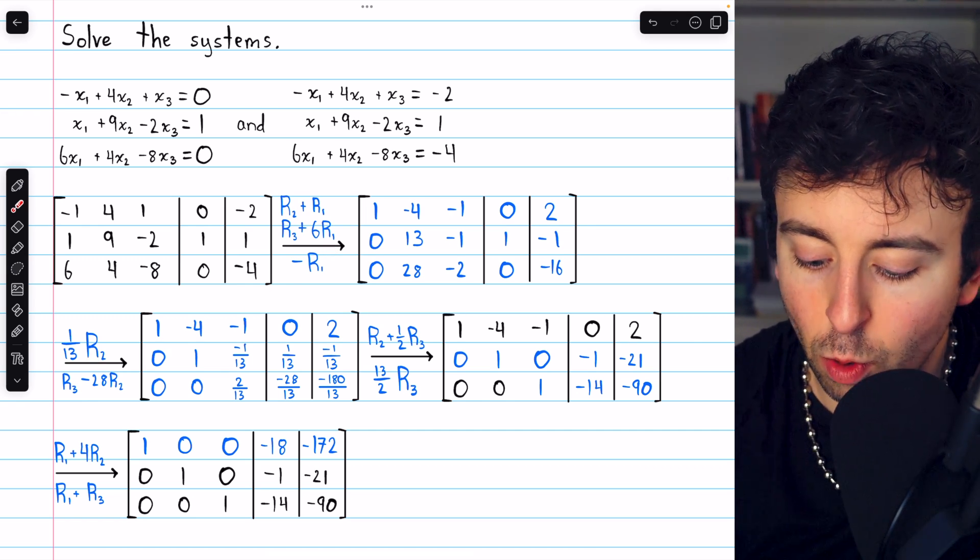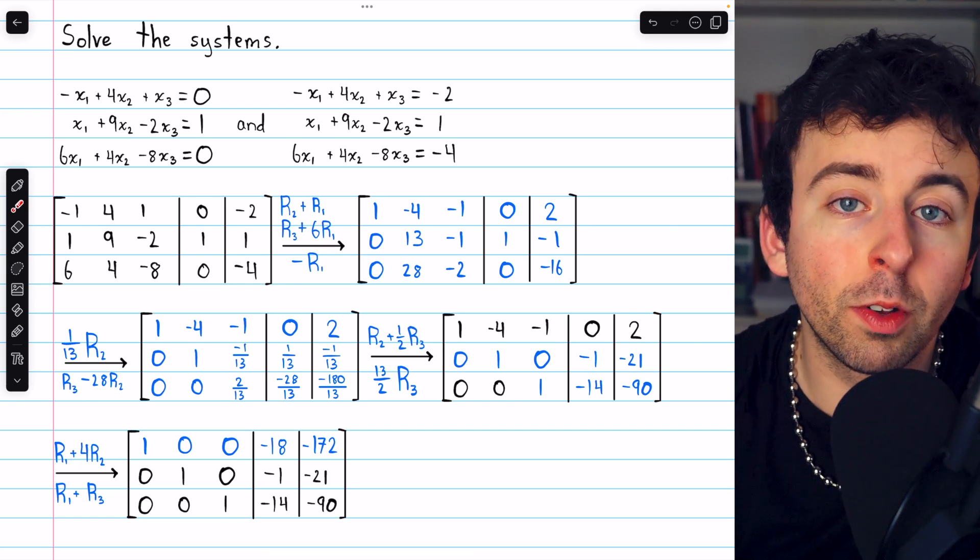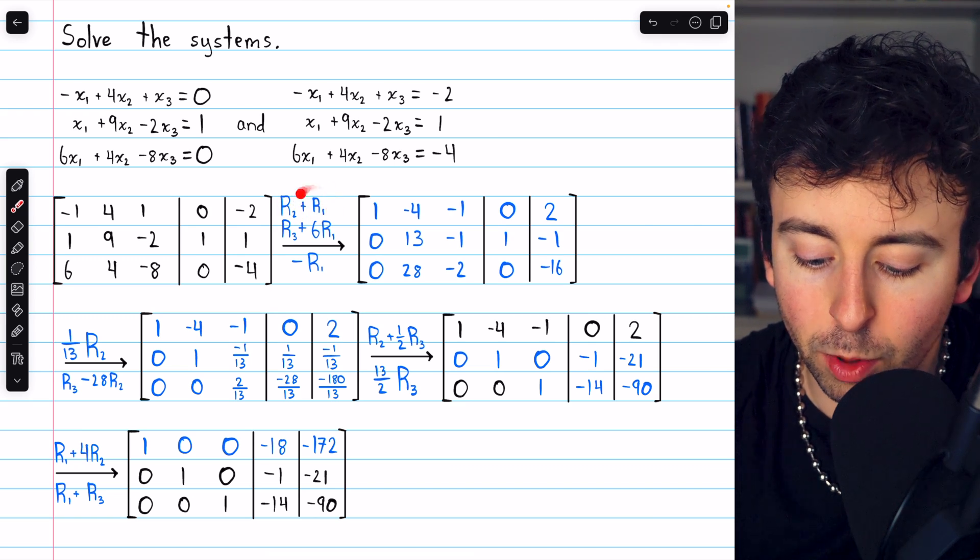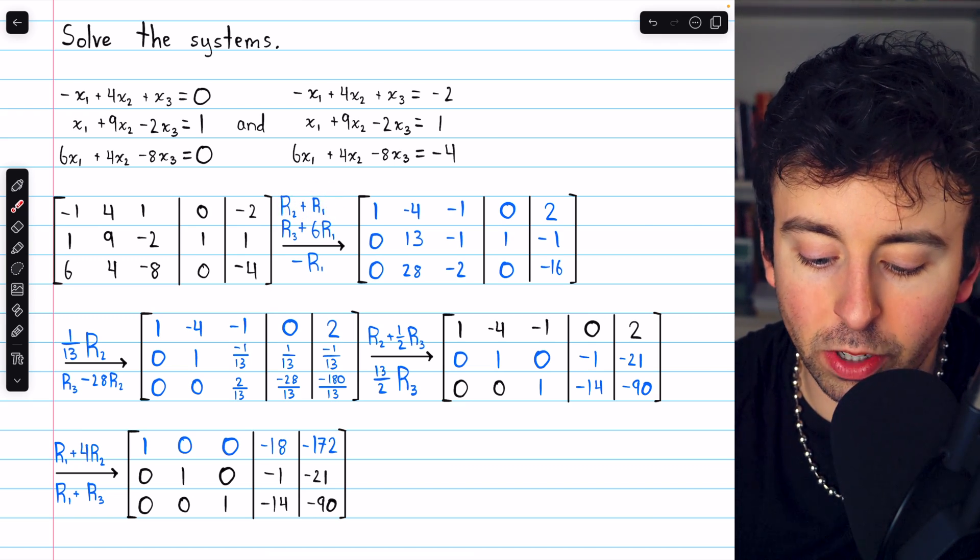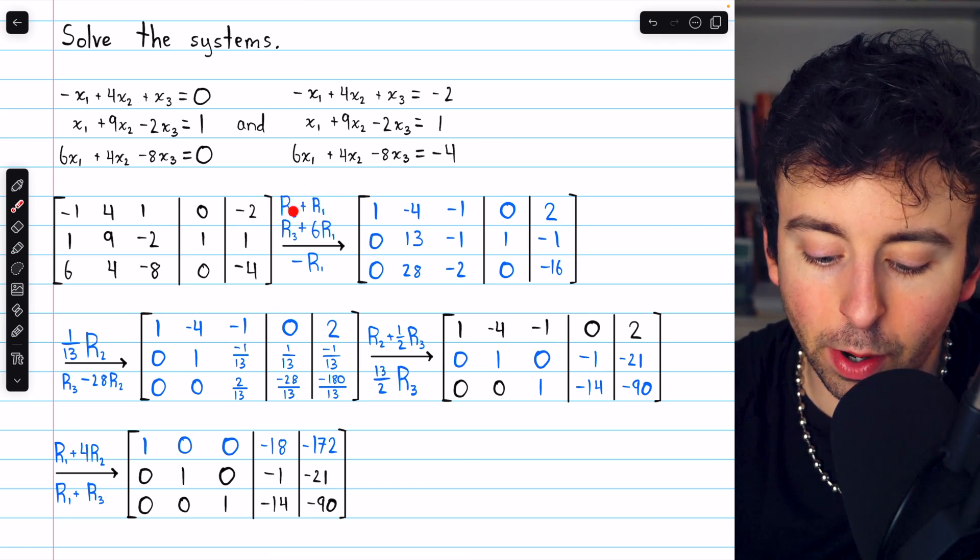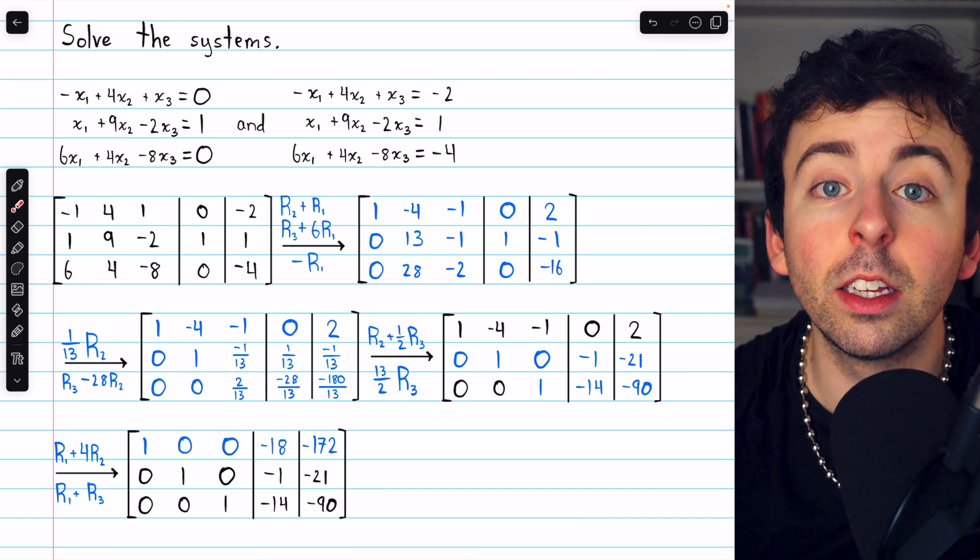I've then performed Gauss-Jordan elimination just to make sure the notation is clear. In this example, you could see row 1 is added to row 2. Because row 2 is written first, the change is being made to row 2.